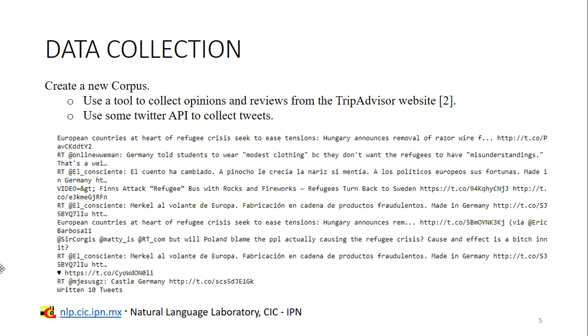For data collection, we are able to create a custom database with a specific topic using other applications or tools for retrieving the information. For example, using Twitter API in Python to find a specific topic, like in this slide, we search the words refugees in Germany. And with the tool, we retrieve the last 10 tweets. Using tools like this API, we are able to create our own review database.